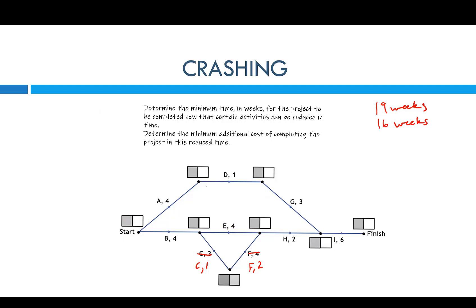E is also on the reduction list — we can reduce E by two weeks. But let's just reduce it by one week for now. So E becomes three. When we do that, we get a new critical path. Starting at zero: to four, to five, four over here. Four plus one gives five. Five plus two gives seven, and four plus three also gives seven — so it doesn't matter which way you take, that's seven. Seven plus two is nine, and nine plus six gives fifteen. So it has reduced the time.